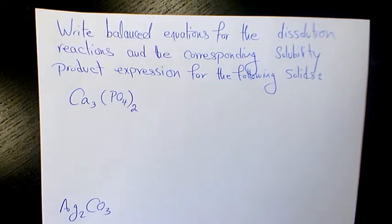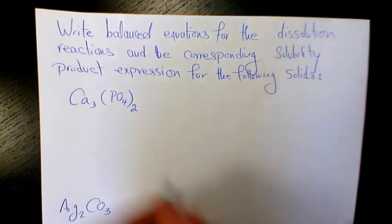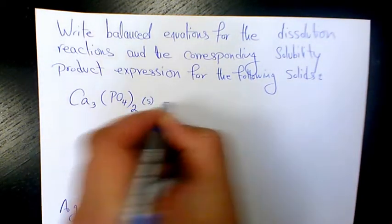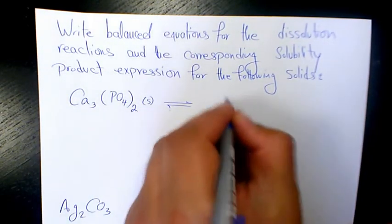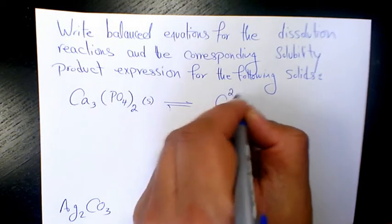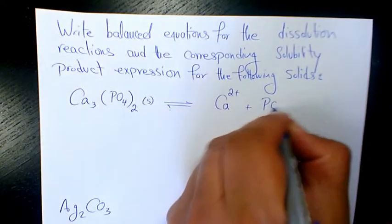The first one is Ca3(PO4)2 which is called calcium phosphate. It is in solid form. When it dissolves it's going to produce calcium 2+ and phosphate.